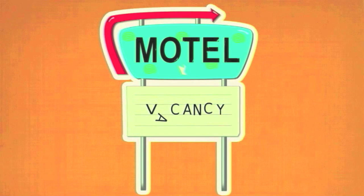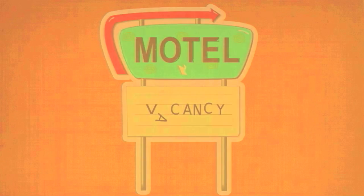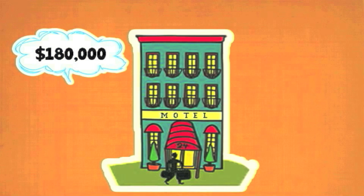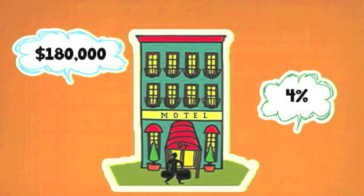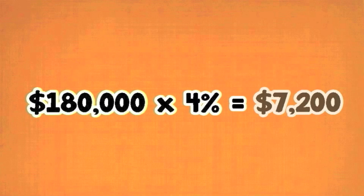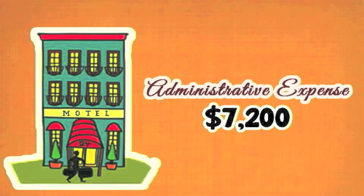Back to the motel example, let's say that we know that the motel building was bought for $180,000. Every year its value depreciates at a rate of 4%. What we would do is take that historical cost of $180,000 and multiply that by 4% to get a yearly depreciation amount of $7,200. Since it's a building, this $7,200 would be recorded as an administrative expense.